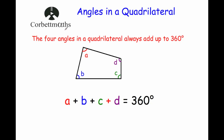Hi and welcome to this Corbettmaths primary video on angles in a quadrilateral. The four angles in a quadrilateral always add up to 360 degrees. So if you've got a four-sided shape, the four angles will always add up to 360 degrees. In other words, angle A plus B plus C plus D would give you 360.